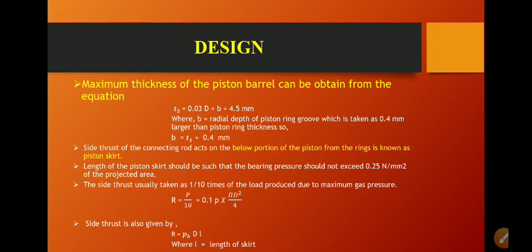The side thrust is also calculated based on the bearing pressure produced due to the piston pin. The side thrust R is equal to PB times capital D (bore of the cylinder) times L, where L is the length of the skirt.